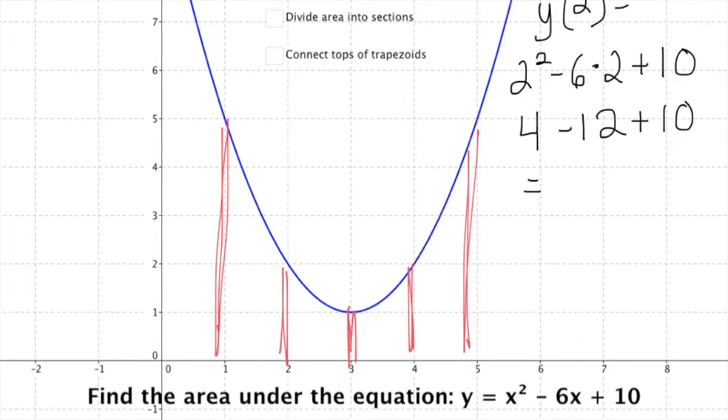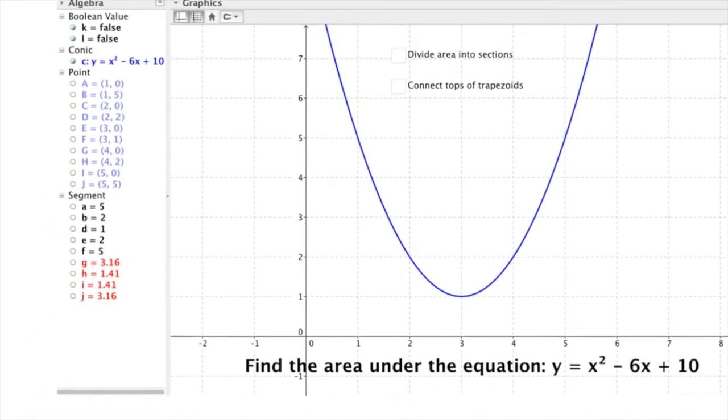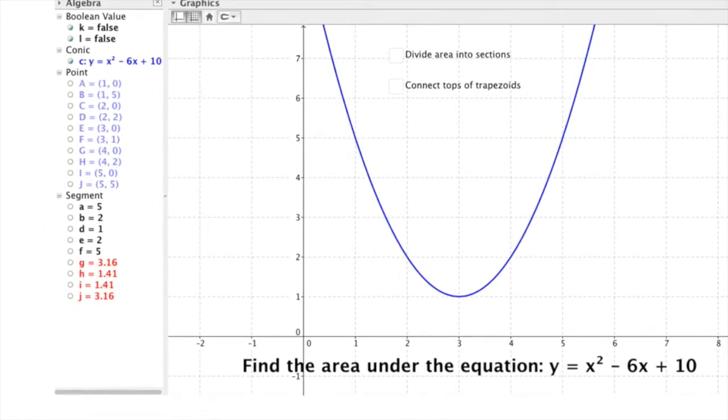We can substitute 2 and figure out that the height there, for instance, is 2, so that makes sense. I'm going to do that for all the other ones. Remember, you can look at the values over in this side window here to find the base lengths.